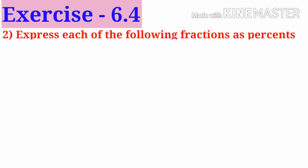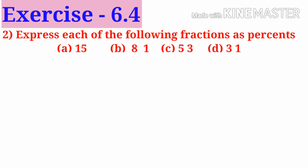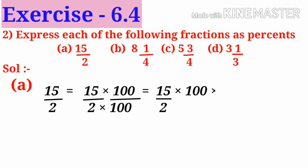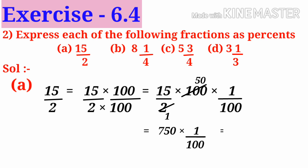Next, number 2: express each of the following fractions as percents. A: 15 by 2. First, multiply both numerator and denominator by 100, written as 15 by 2 into 100 into 1 by 100. On simplification by 2, we get 15 into 50 is 750 into 1 by 100. Now, 1 by 100 can be replaced by the percent symbol, so the answer is 750 percent.